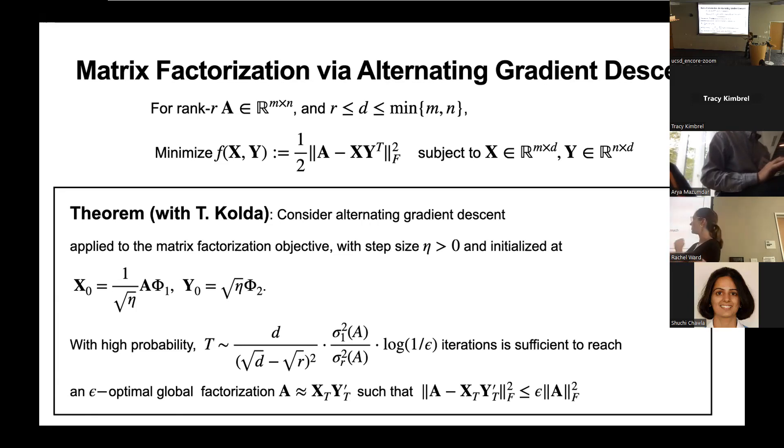But once D is like 1.5 R, we overparameterize by a small multiplicative factor, this constant is like 2. And this overparameterization benefit we get just using random matrix theory on the initial factors.